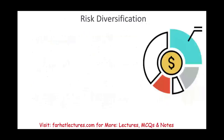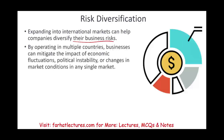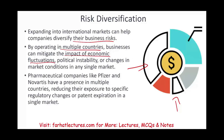Risk diversification means you want to diversify your sources of revenue. When you expand into international markets and operate in multiple countries, you can mitigate the economic impact of fluctuations in any one country — if one market is underperforming, another may be doing better. For example, pharmaceutical companies like Pfizer and Novartis have presence in multiple countries to reduce exposure to regulatory changes or patent expirations in a single market.